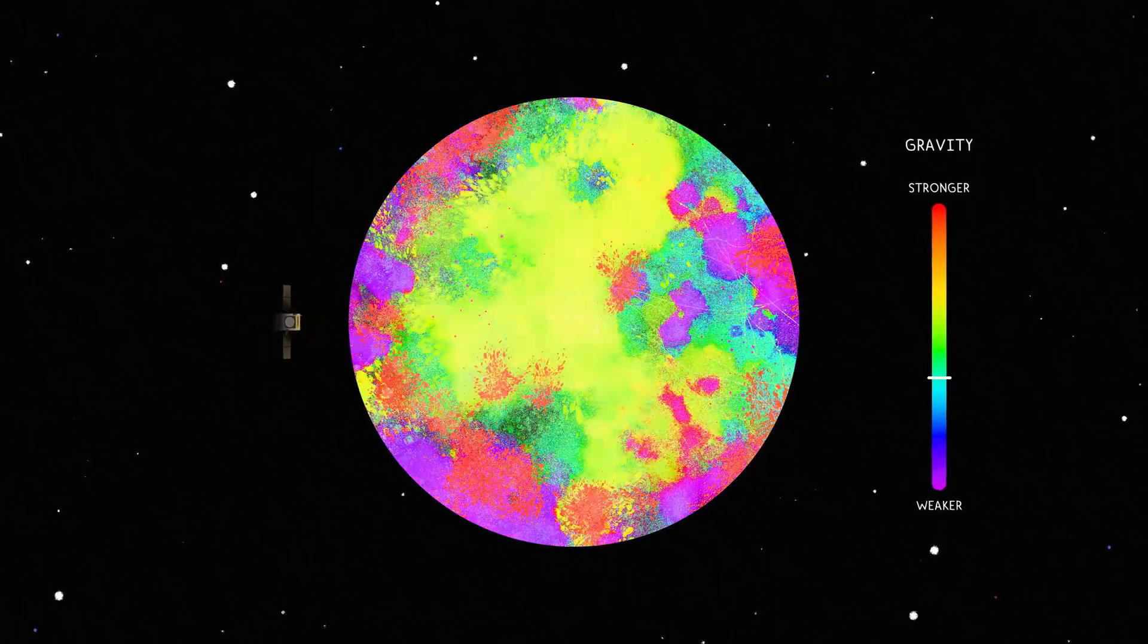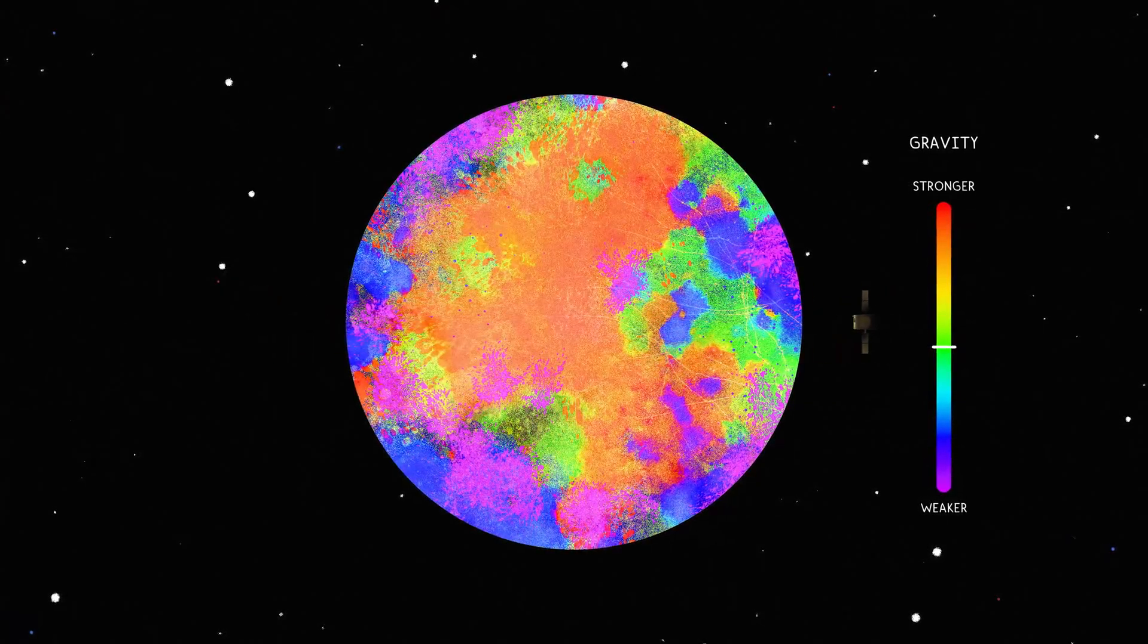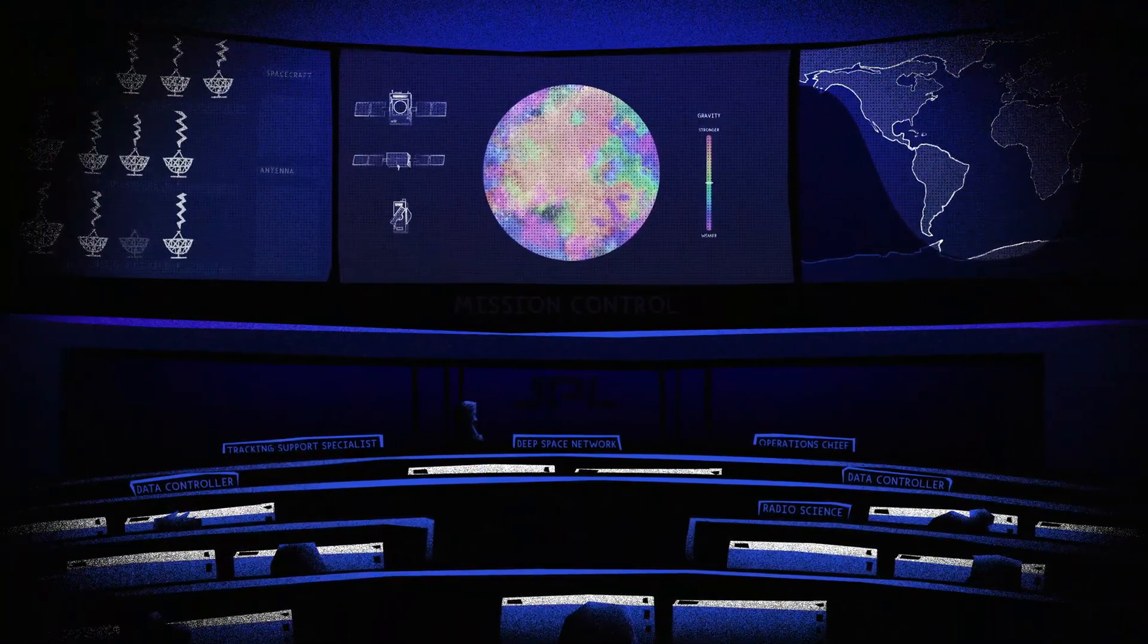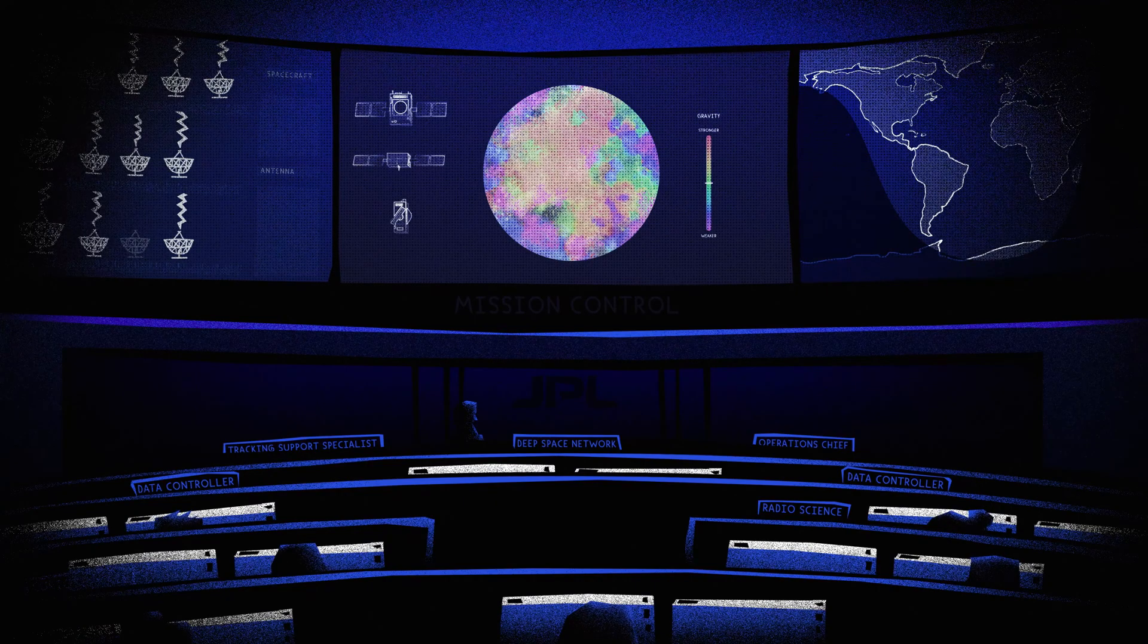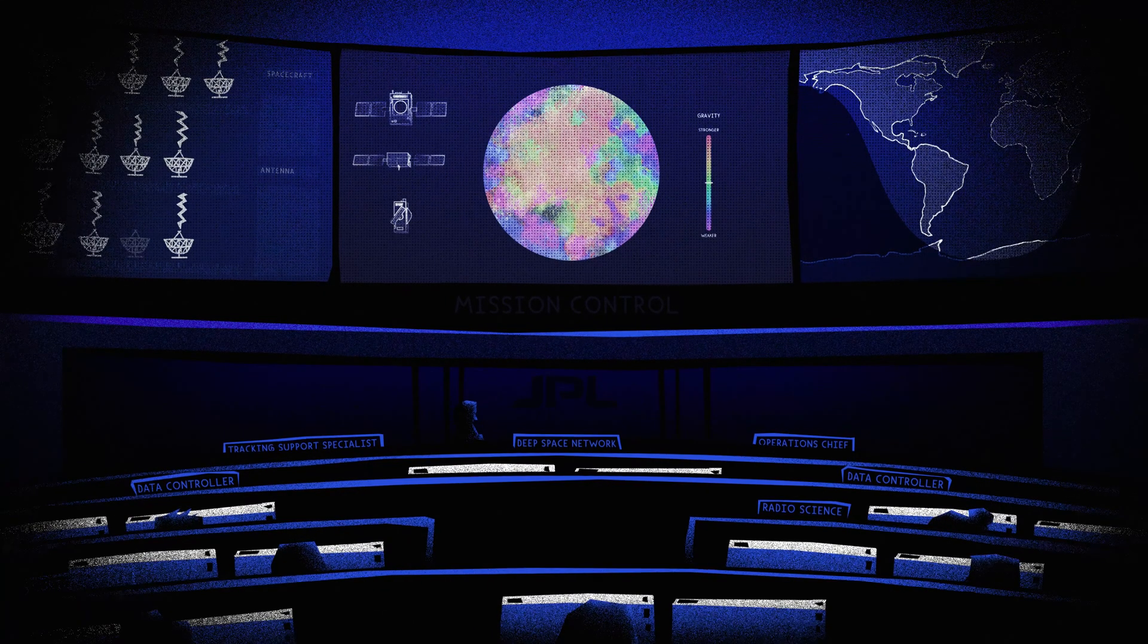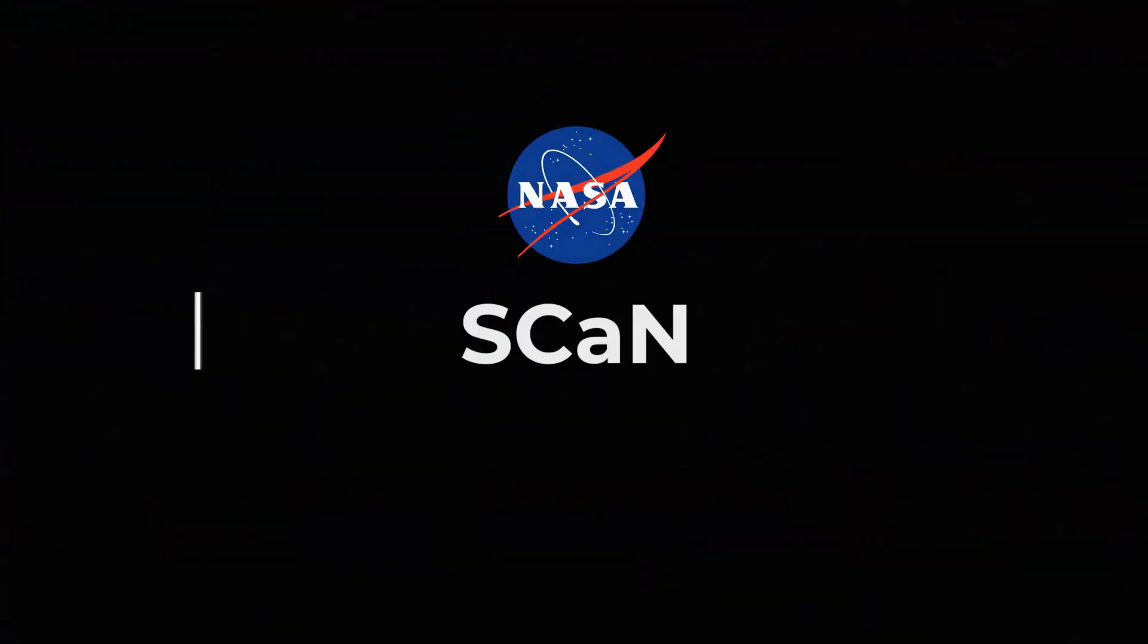By developing a model of the planetary body's gravitational field, which can be mapped as a gravitational shape, scientists and researchers can deduce information about its internal structure, all while using the Deep Space Network. To learn more about the Deep Space Network, visit go.nasa.gov slash about dash DSN.